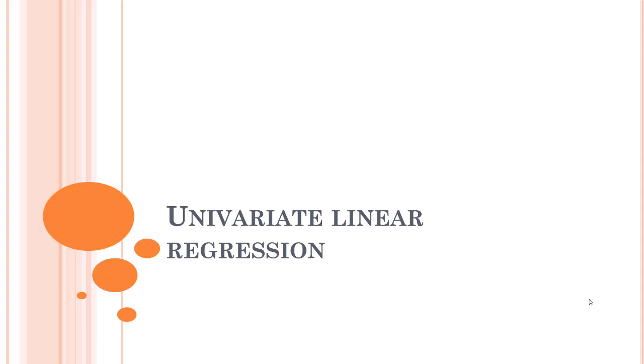Univariate linear regression is where we have a single predictor and for that predictor we have a target value. For example, years of experience and salary - salary is the target variable and years of experience is the predictor.